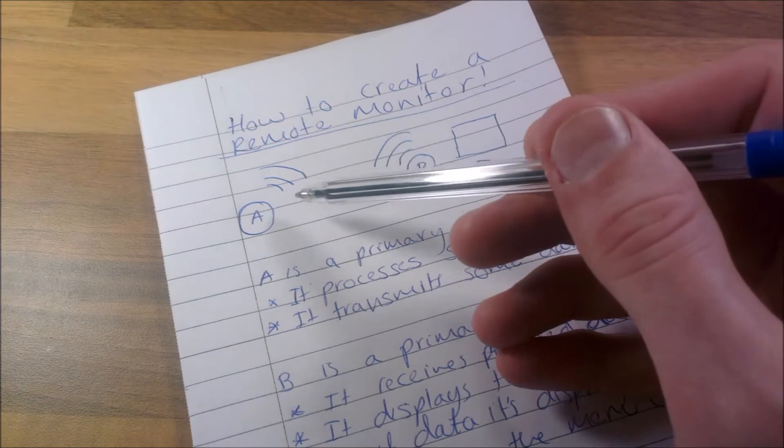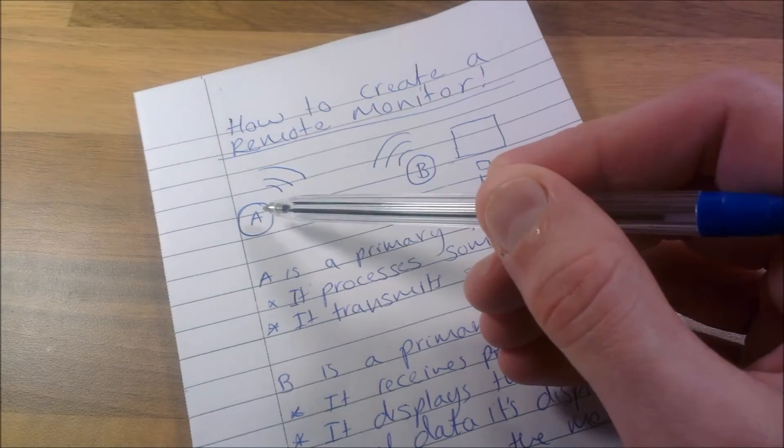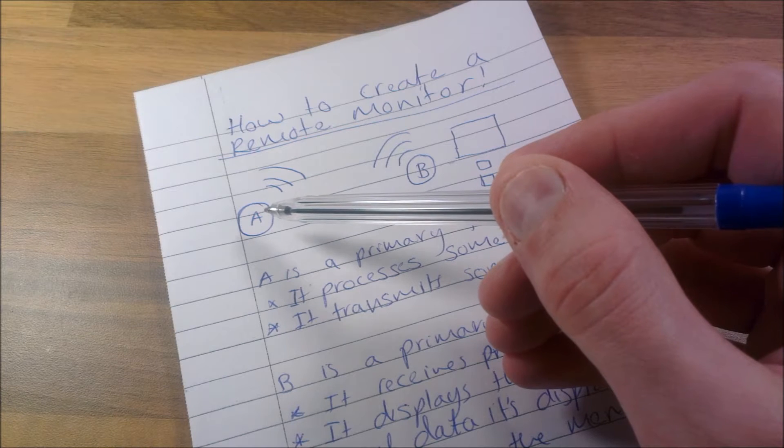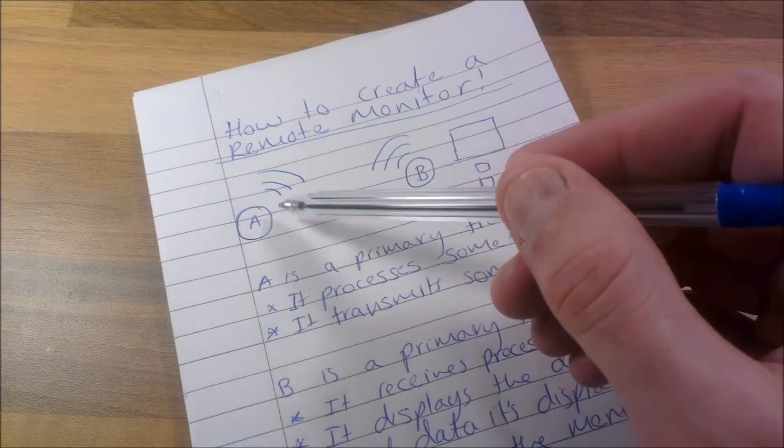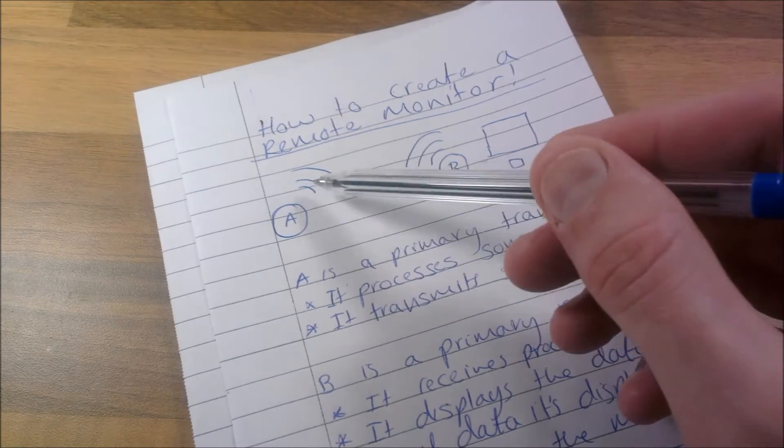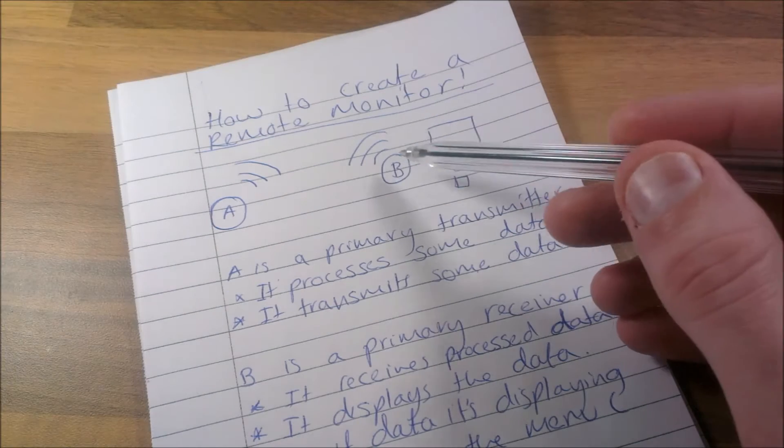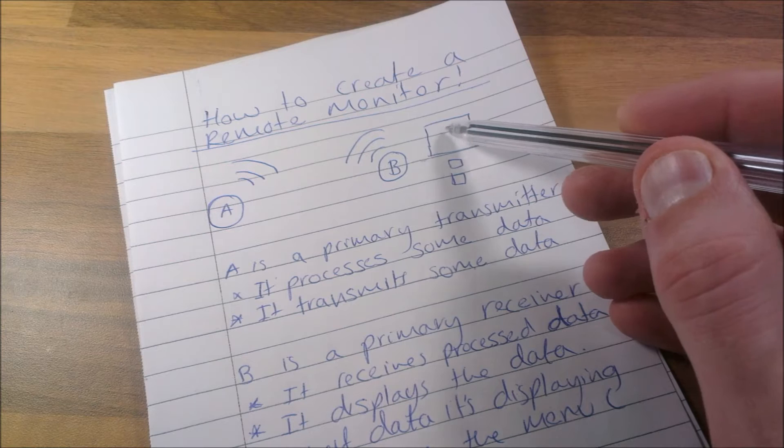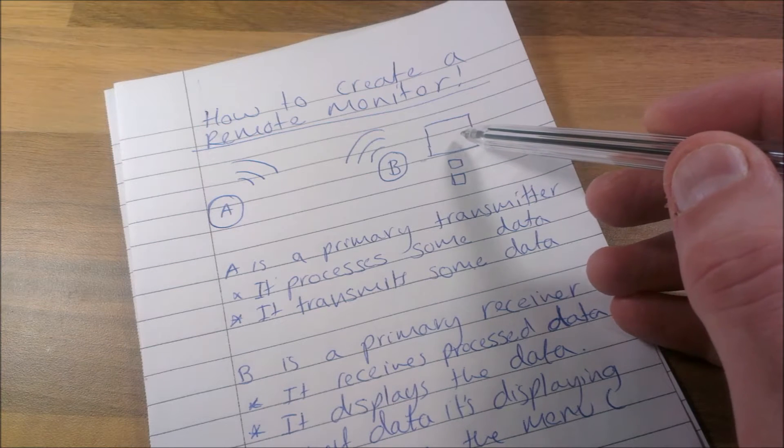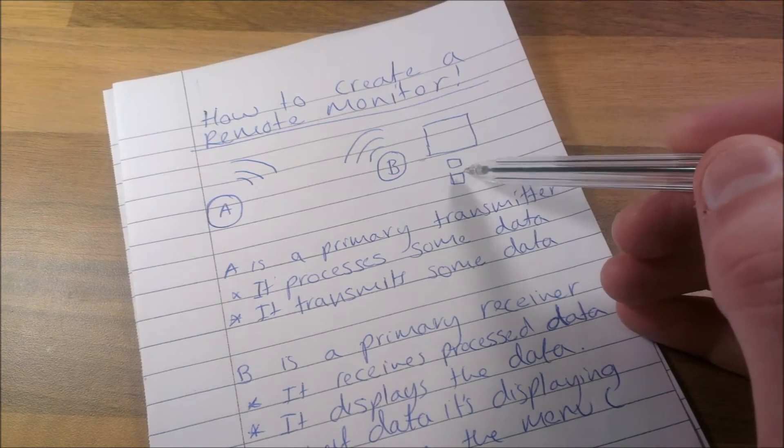Let's say we have A here which does some processing. It processes data maybe from sensors, a microphone, or a camera, but it does some processing and then transmits data. Then this remote monitor receives the data and presents information on a screen to the user. The user can have up and down buttons to cycle through menus.